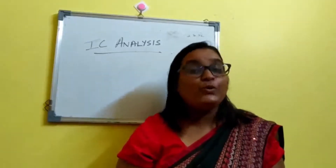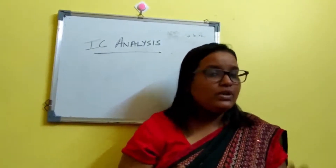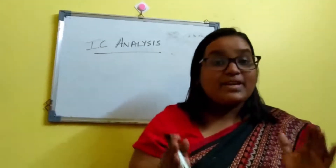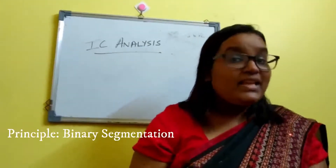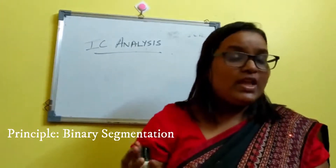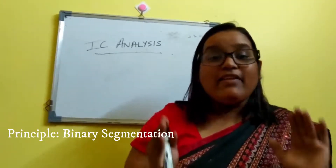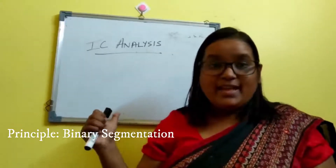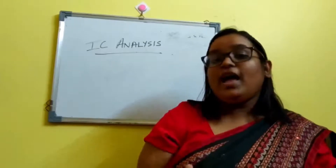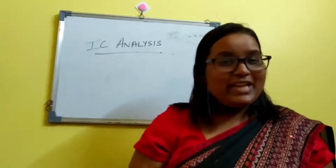So that was how to do IC analysis of sentences — it's actually pretty simple if you devote a little bit of time to work it out. The principle behind it is binary segmentation: you get a sentence, you split it into two, then you again split what you have into two, until you get down to the level of morphemes. That is how IC analysis is done. I hope you enjoyed this video and that it was beneficial for you in your lesson on linguistics. Have a good day. Bye.